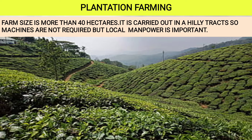Now let us see plantation farming. Farm size is more than 40 hectares, and it is carried out in hilly tracts. Machines are not required, but local manpower is important — local people staying in that area are required for this farming. This is called plantation farming, and it is found in hilly areas.